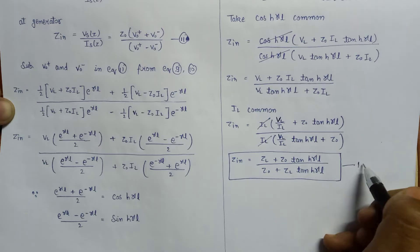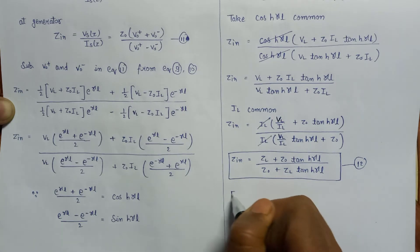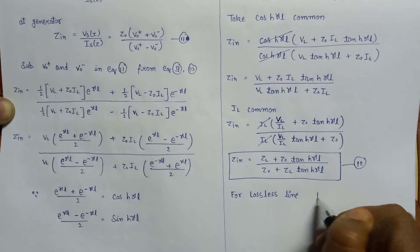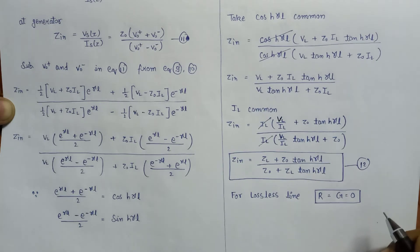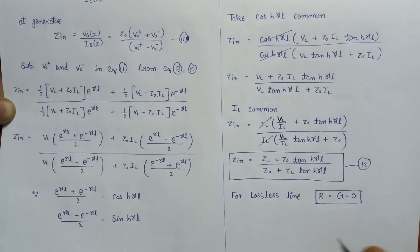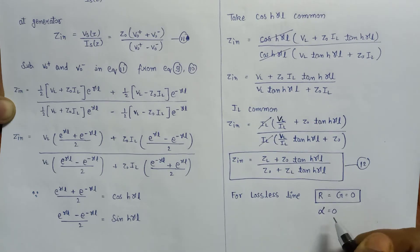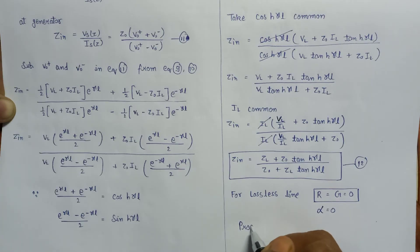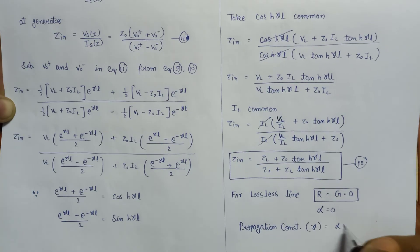This is equation number 12. Now for the lossless line, we discussed that for a lossless transmission line R equals G equals zero — this is the condition for the lossless transmission line. We have also evaluated that for the lossless transmission line the attenuation constant alpha equals zero. Also, the propagation constant gamma is equals to alpha plus j beta.